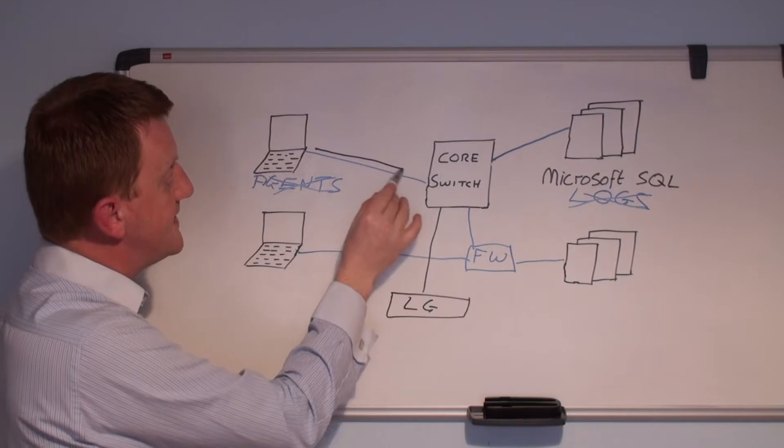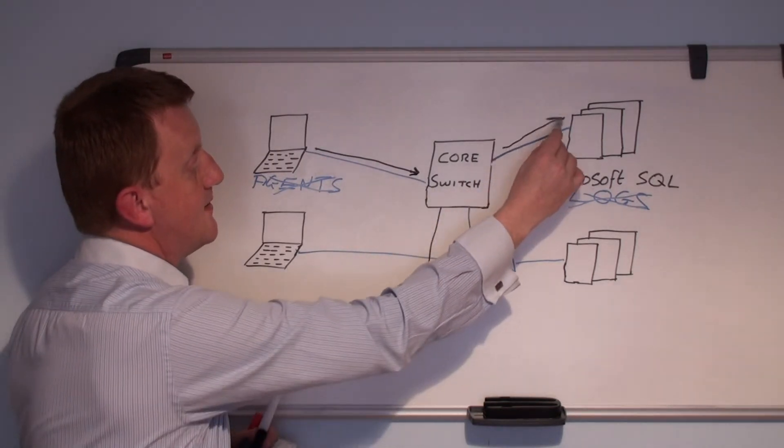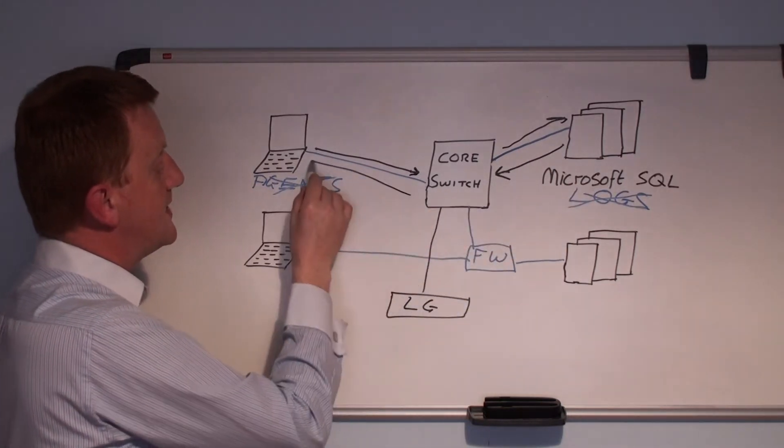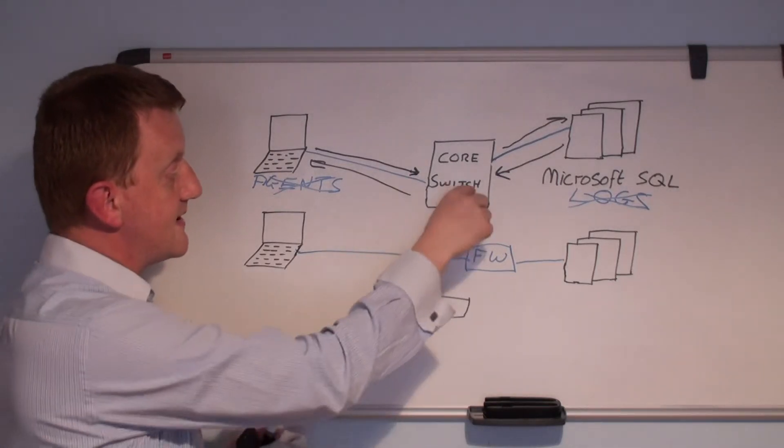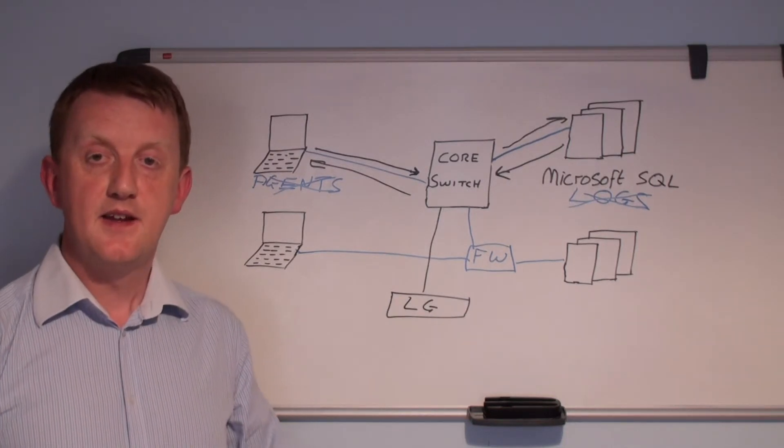We get a copy of the data of the traffic as it goes from the clients to the servers, or the servers sending data back to the clients. So as the traffic transits the core, we get a copy of it to the LandGuardian, and we analyze that.